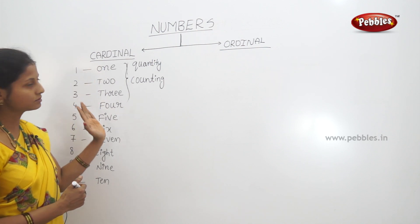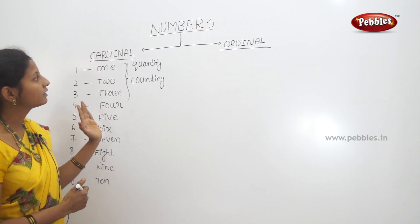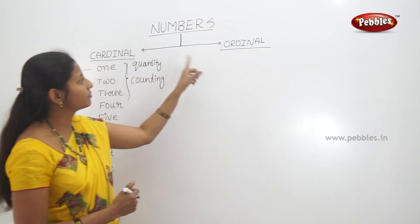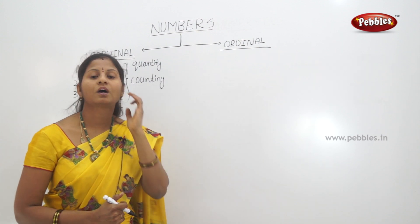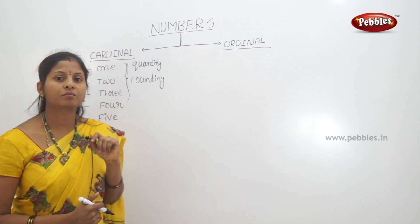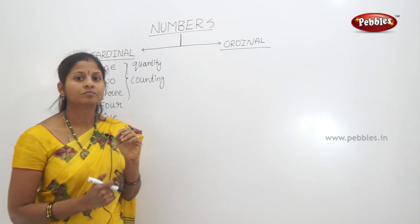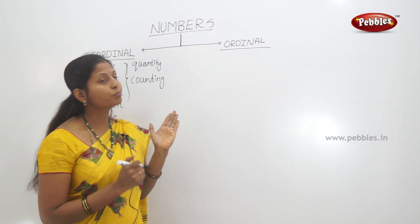So, these are ordinal numbers. The next type is ordinal numbers. Ordinal numbers indicate position.